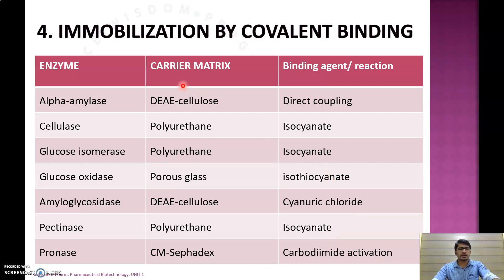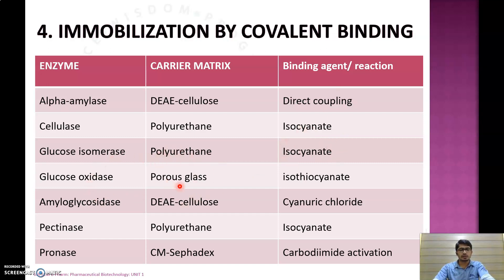Some examples of enzymes with their carrier matrix and binding agent: alpha-amylase is covalently bonded with DEAE-cellulose by direct coupling, cellulose with polyurethane by isocyanate as binding agent, glucose isomerase with polyurethane by isocyanate as binding agent, and glucose oxidase with porous glass as matrix using isothiocyanate as binding agent.